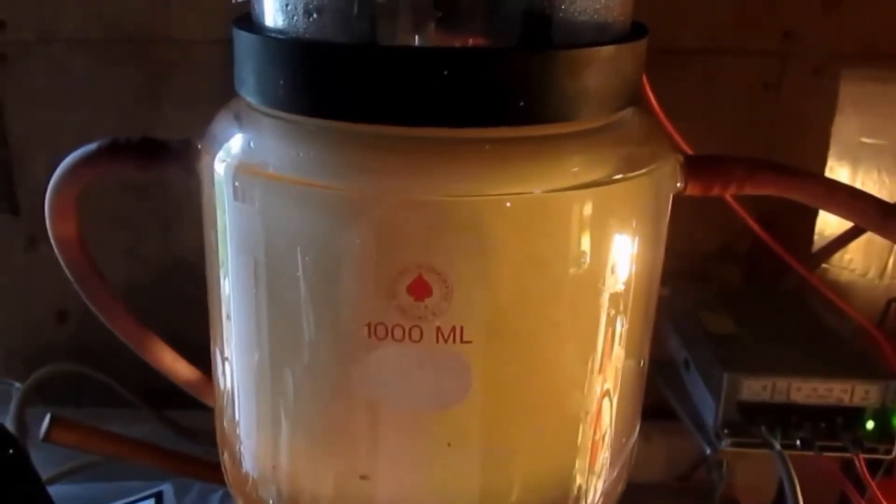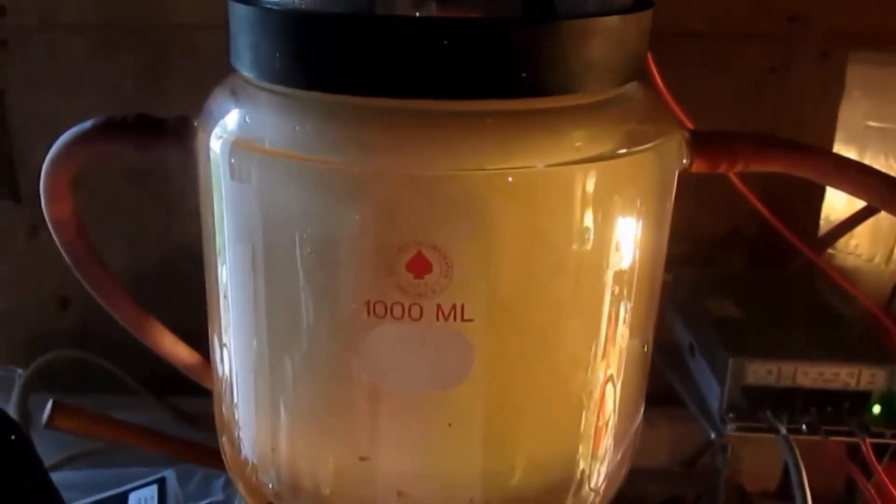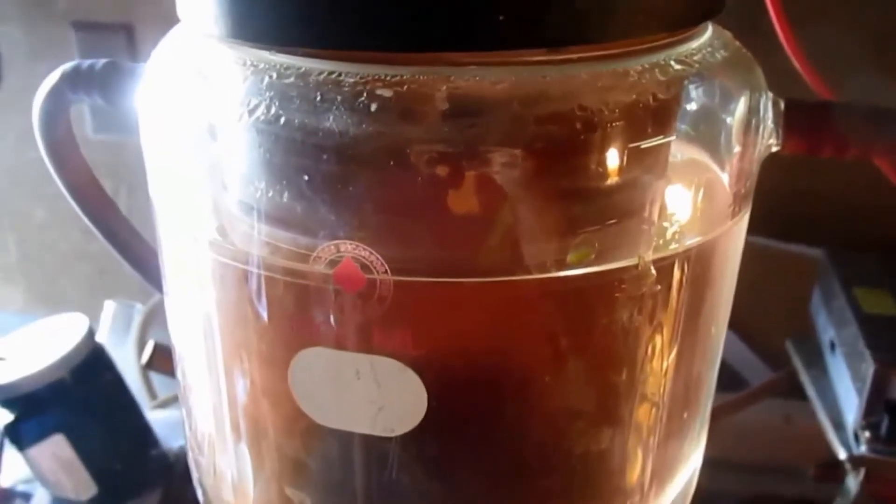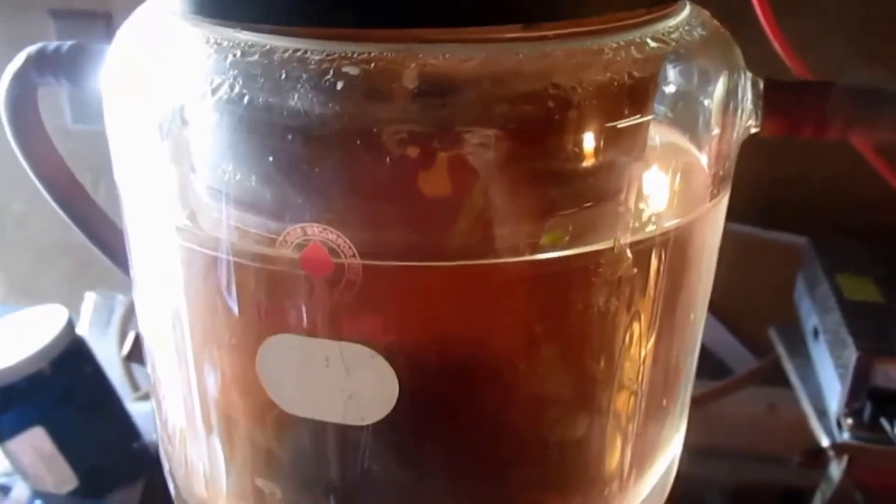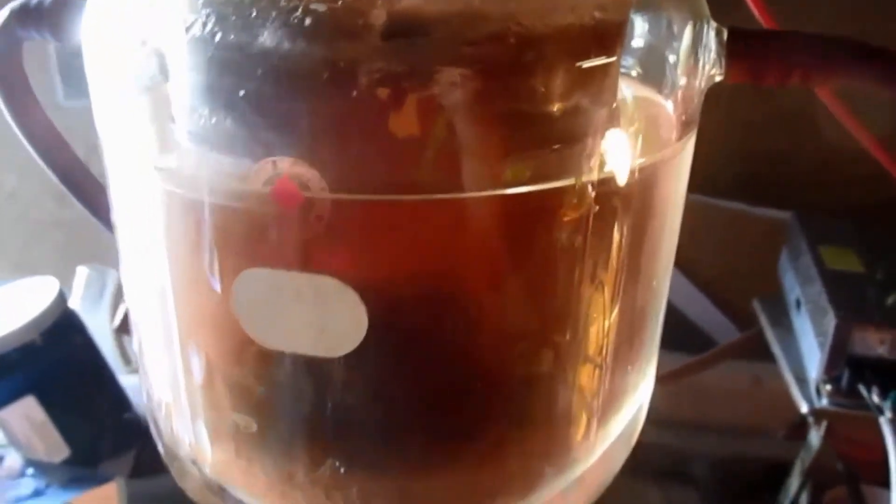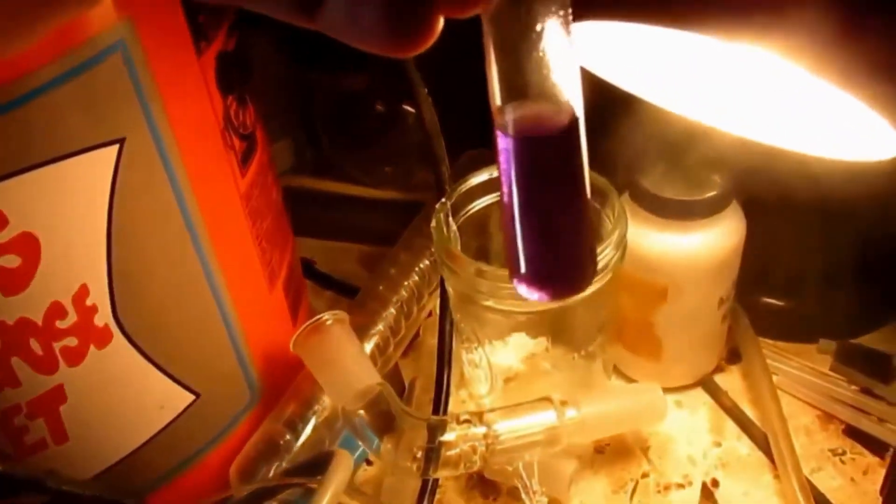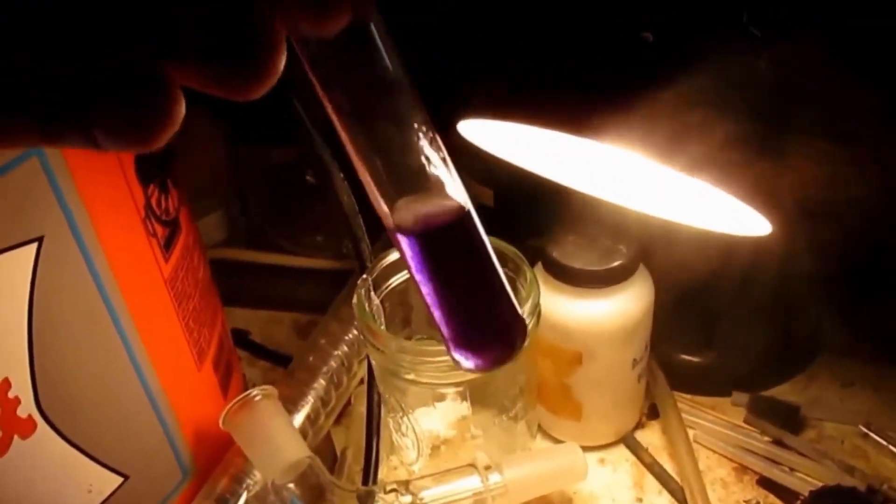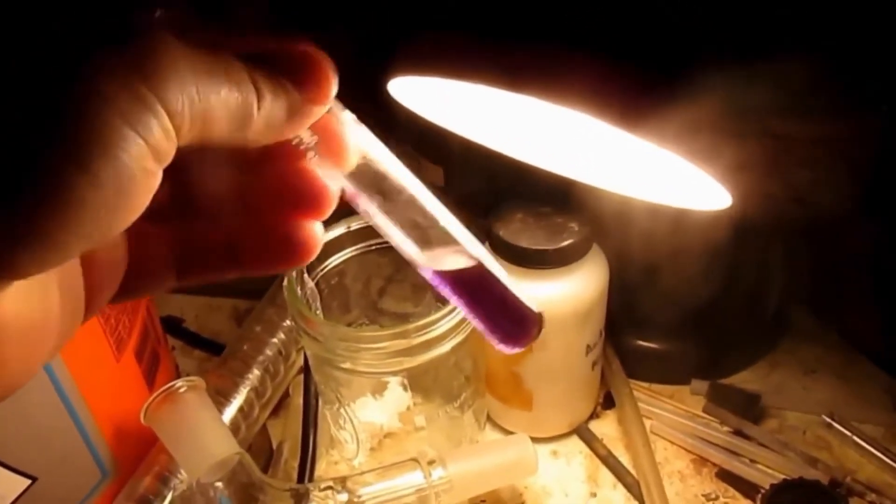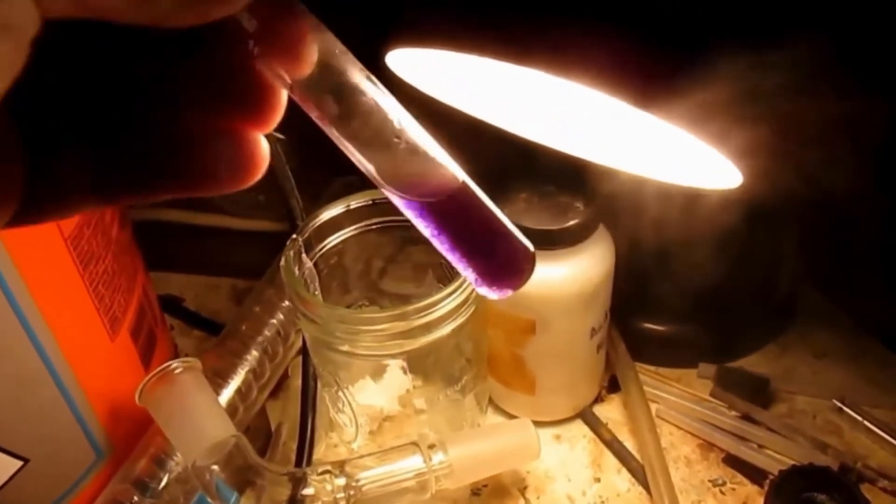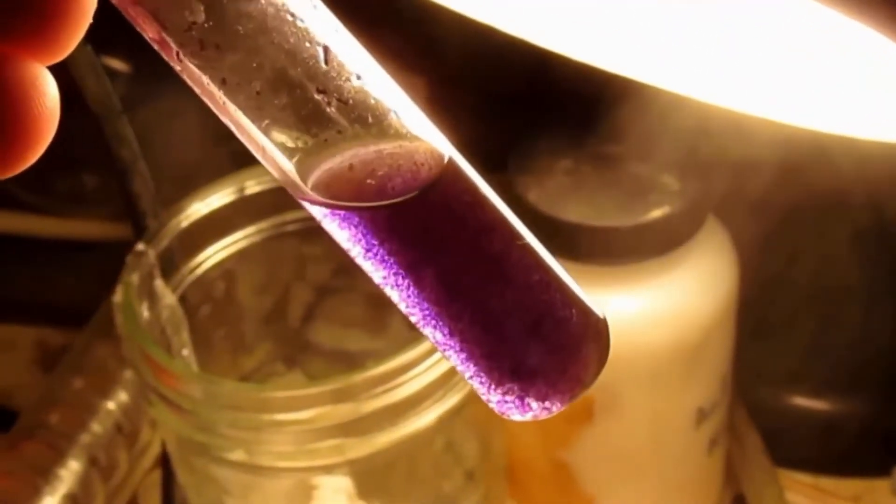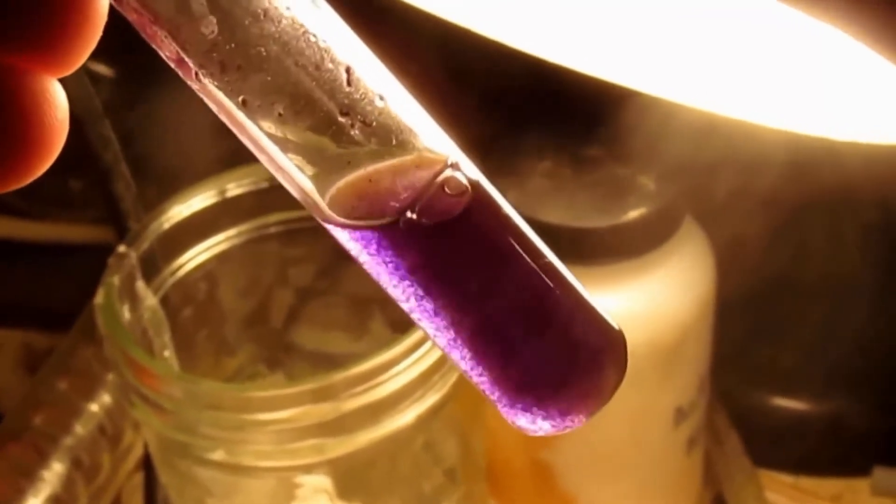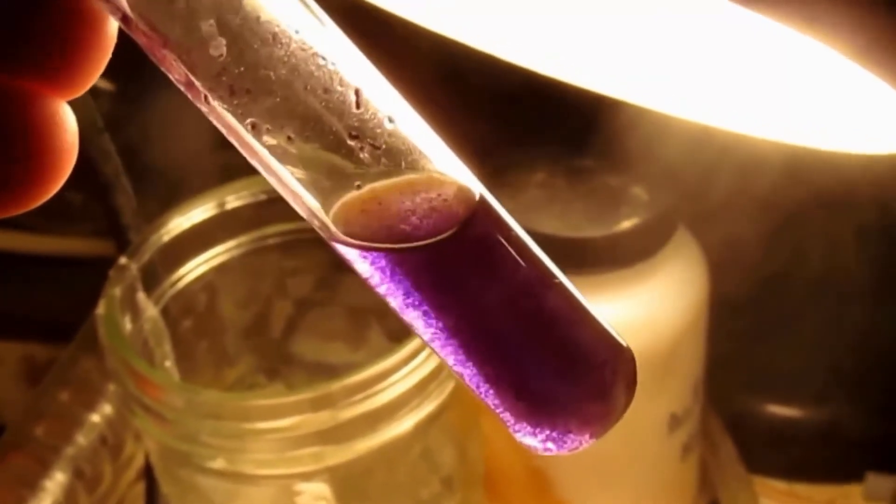Here we are, approaching approximately 72 hours later. I reacted a sample of the electrolyte with a 1% methylene blue solution. The precipitate and the violet color strongly indicates that perchlorate is present in the cell.